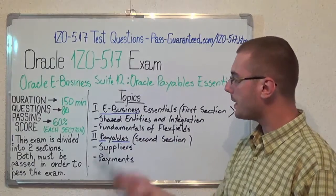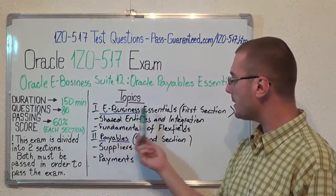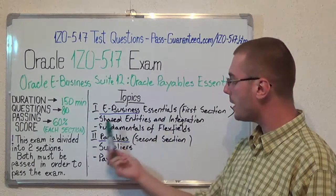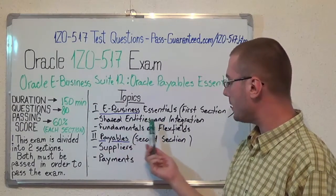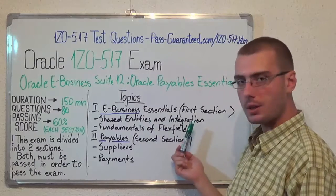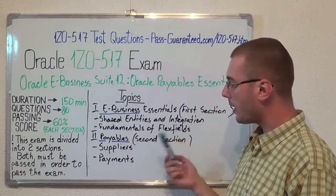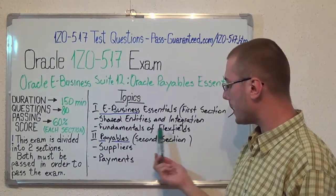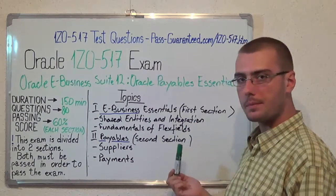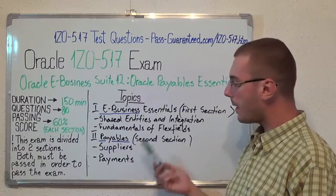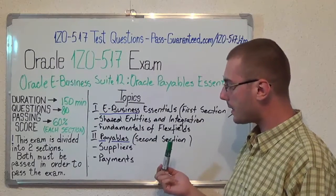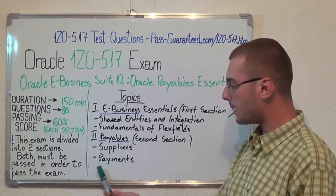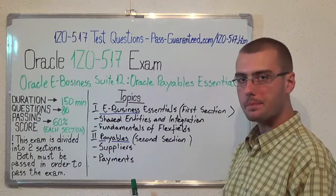The first section is E-Business Essentials, which covers Shared Entities and Integration, Fundamentals and Flex Fields. The second section is Payables, with Suppliers and Payments.